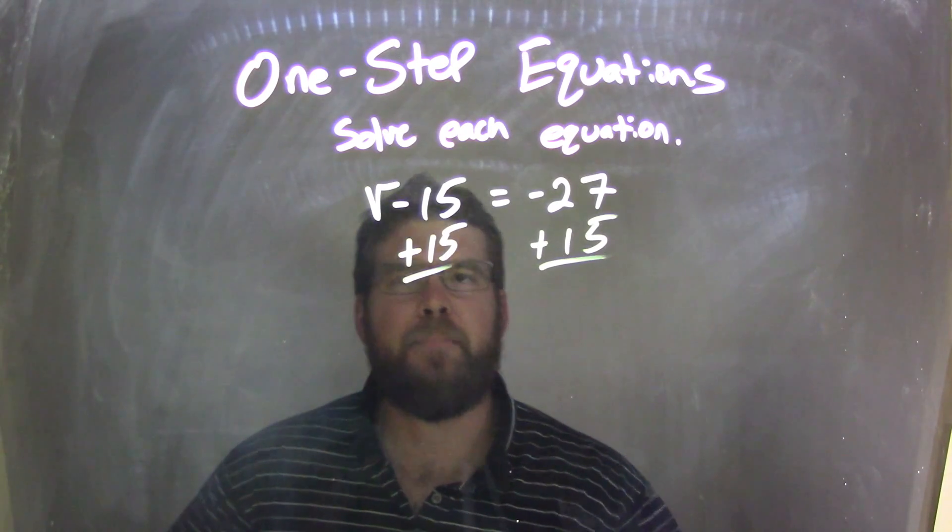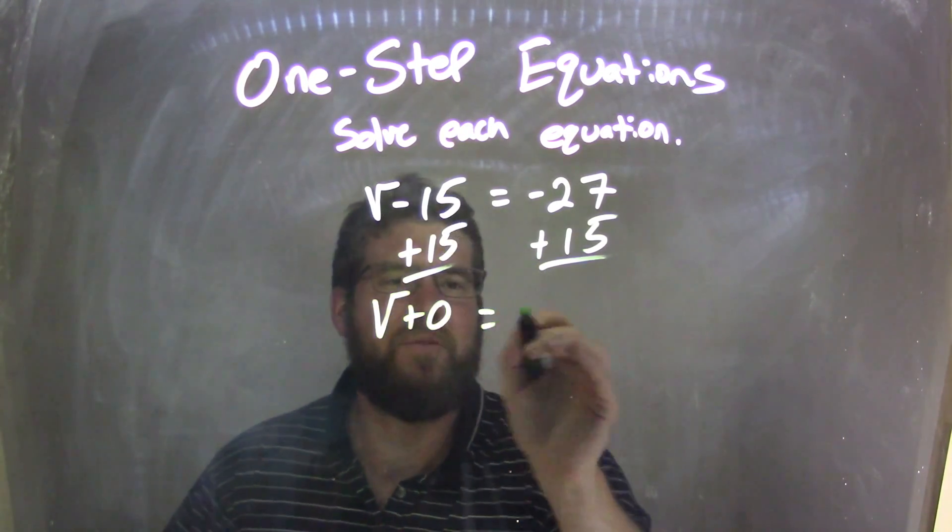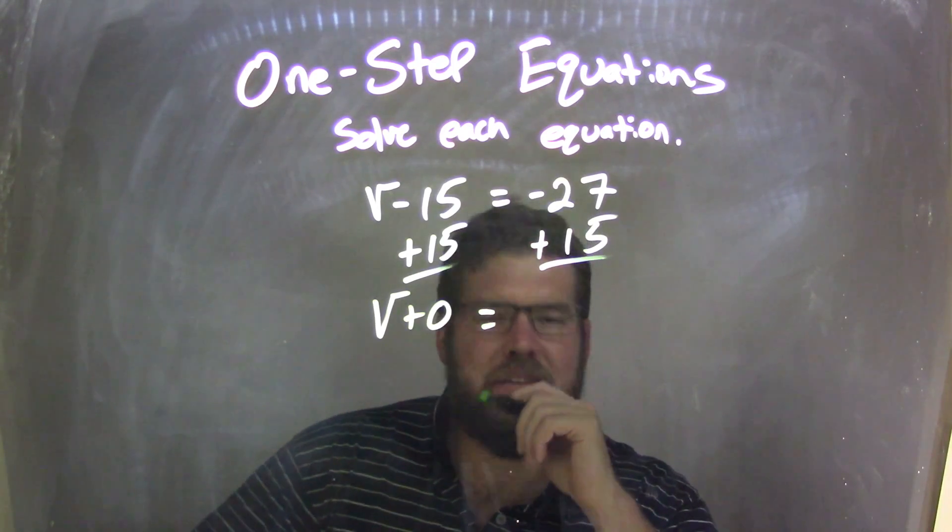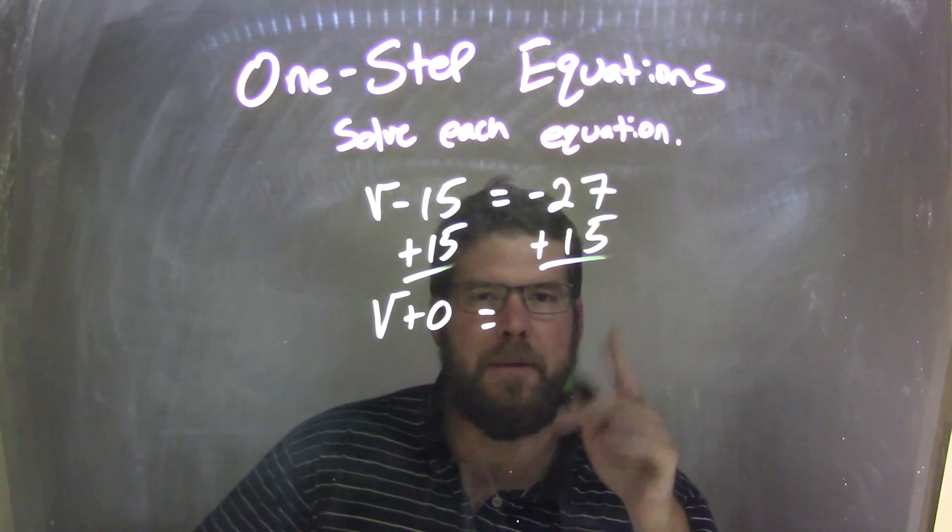This becomes tricky, right? I have a negative 15 plus 15, and that cancels out. That's v plus 0, don't really need that. But negative 27 plus 15, and here's a technique you can try.